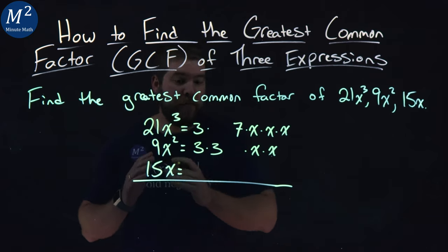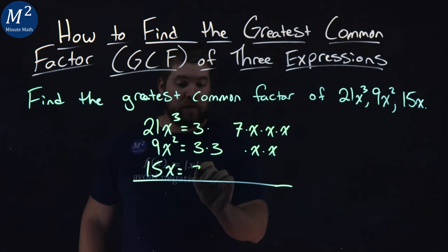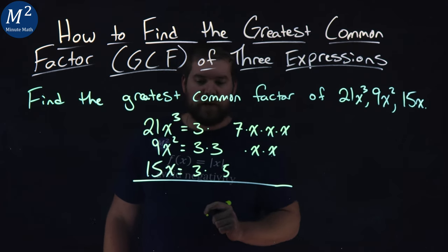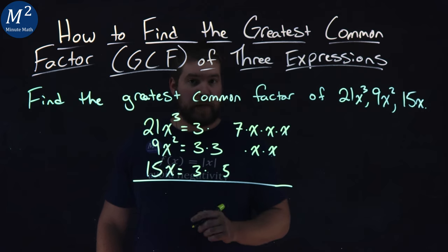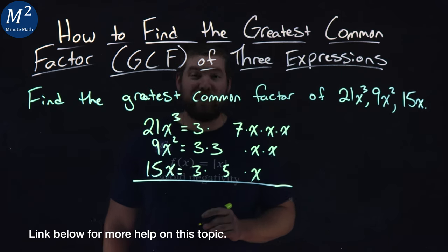Lastly, we have 15. Now 15 breaks down to be 3 times 5. I'll put it right here, 3 times 5 is 15. That's the prime factorization. And then we just have the x left over.